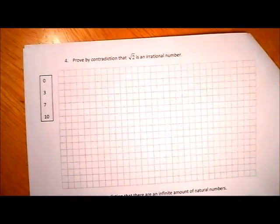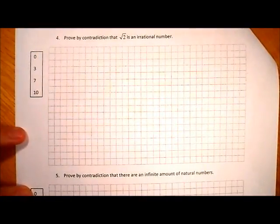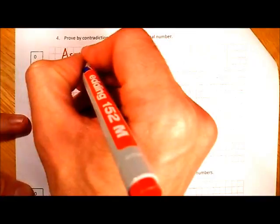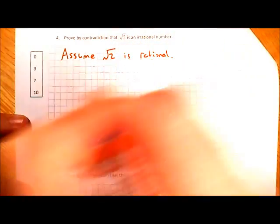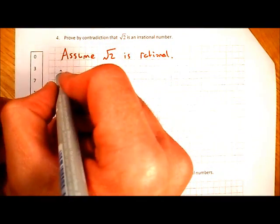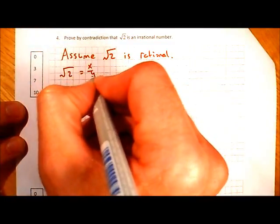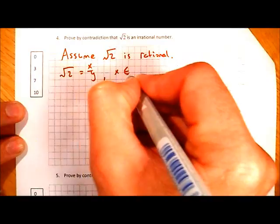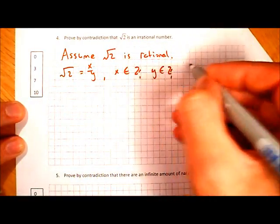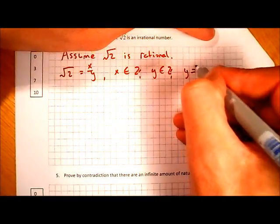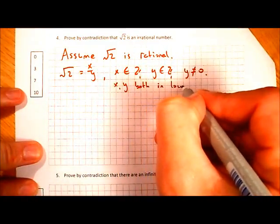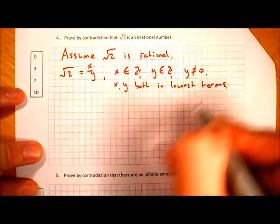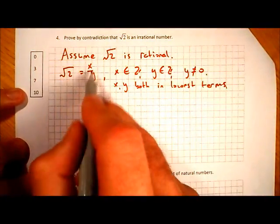Now we have to prove that the square root of 2 is irrational using proof by contradiction. We assume the opposite — that the square root of 2 is rational. That means it can be written as X over Y, where X and Y are both integers, Y is not zero, and the fraction is in its lowest terms.